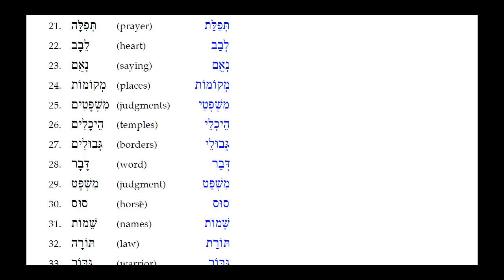Number twenty-eight: Sus — remember certain nouns have historical long vowels in them that will not reduce, so they are the same in both absolute and construct. Sus is both masculine singular absolute and masculine singular construct.